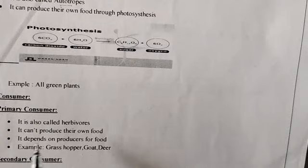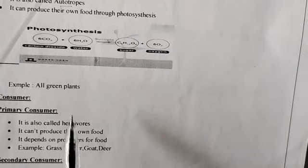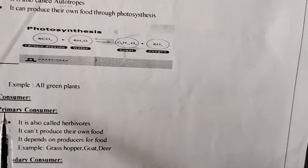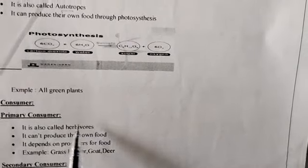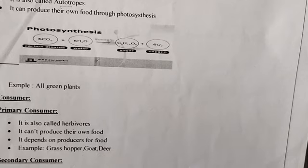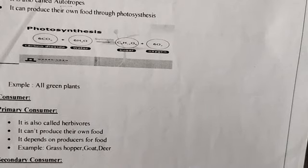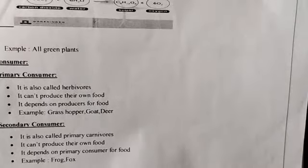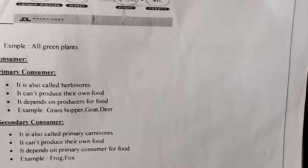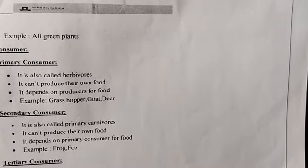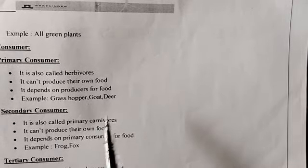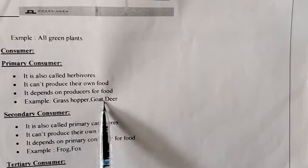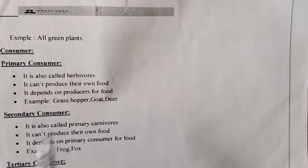Next, consumers. We have three types of consumer. First is primary consumer — they are the herbivores. They cannot produce their own food and depend on producers for food. Examples: grasshopper, goat, deer.